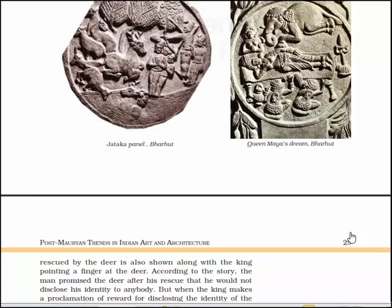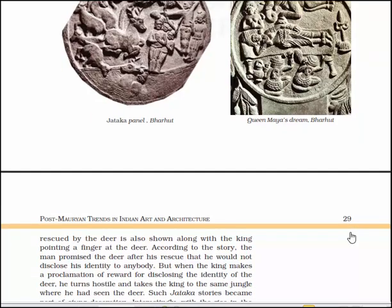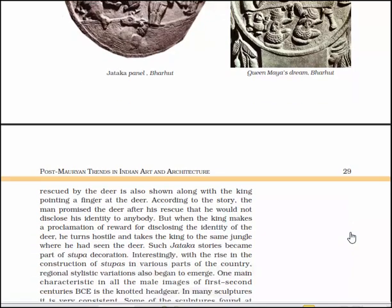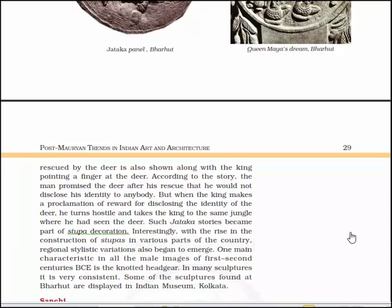According to the story, the man promised the deer after his rescue that he would not disclose his identity to anybody. But when the king makes a proclamation of reward for disclosing the identity of the deer, he turns hostile and takes the king to the same jungle where he had seen the deer. Such Jataka stories became a part of stupa decoration, and with the rise in the construction of stupas in various parts of the country, regional stylistic variations also began to emerge.